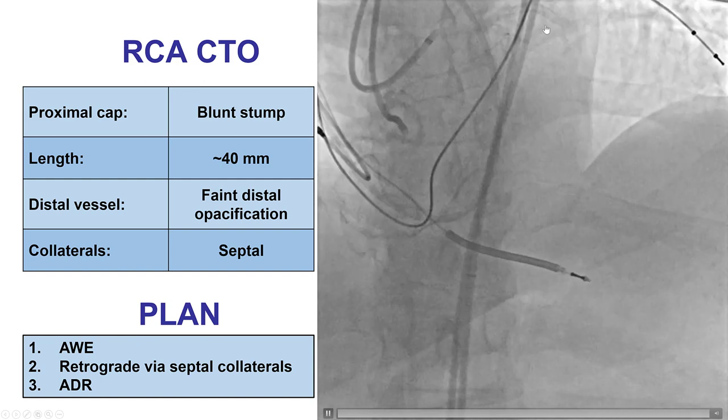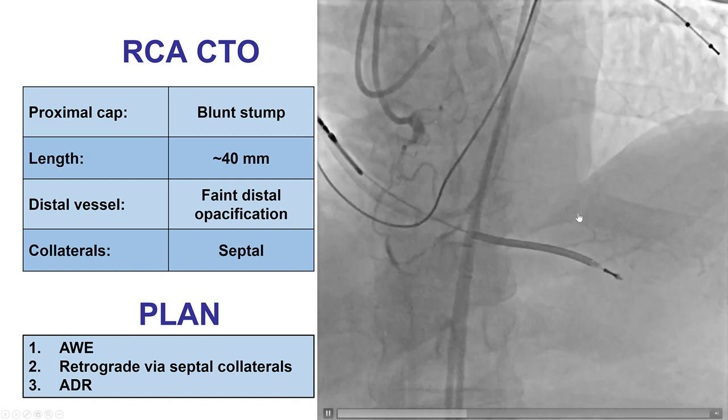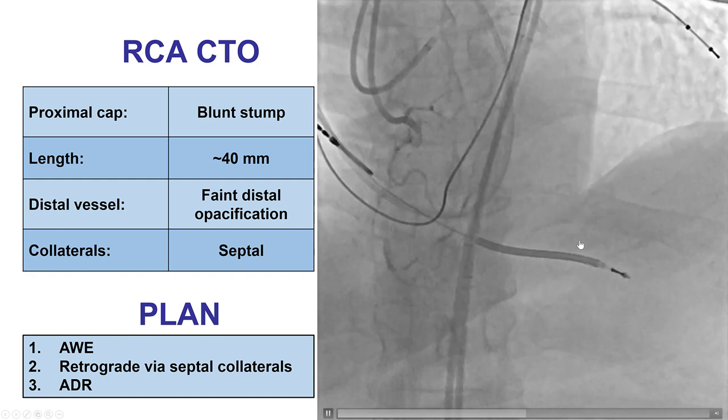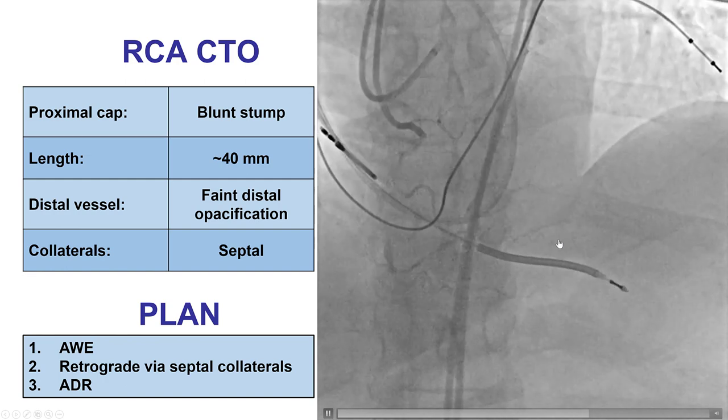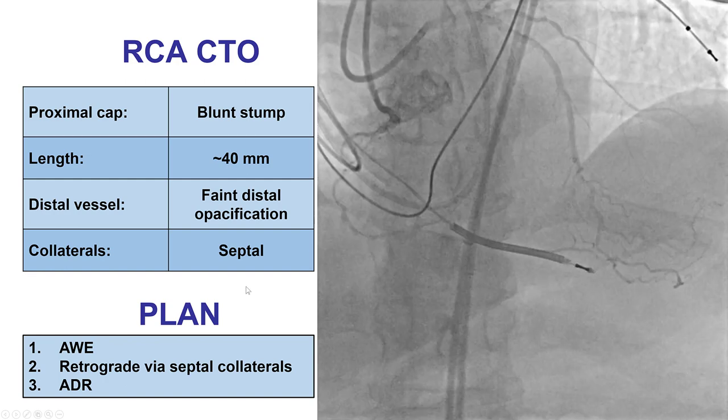If that didn't work, the next approach would be to go retrograde through the septal collaterals, followed by ADR as a third option.